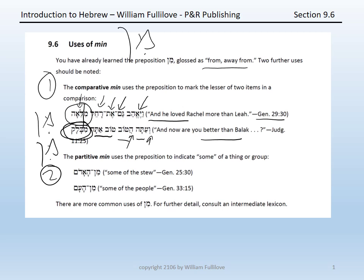Secondly, we have the partitive min. This is the use of the preposition min to indicate 'some of' a thing or group. In Genesis 25:30, Esau asks for min ha-adom, meaning 'some of the stew.' In Genesis 33:15, we have min ha-am, meaning 'some of the people.' You can almost think of the partitive min as 'from the stew' or 'from the people,' but in English we use the phrase 'some of' to indicate this partitive idea.